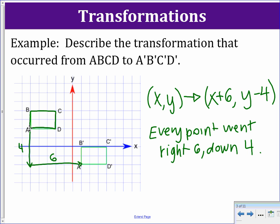You can verify this by looking at the coordinates. The original point for A is (-5, 2), and A prime is (1, -2). Comparing -5 to 1, you added 6. Comparing 2 to -2, you subtracted 4. So that is the rule for this translation.